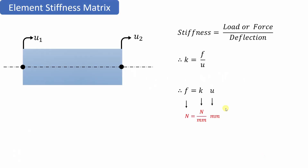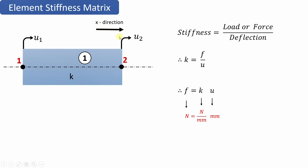In this video we will see how to find out the global stiffness matrix. First we will understand the formulation of the element stiffness matrix and then go into detail of the global stiffness matrix. Stiffness is nothing but load per unit deflection, denoted by k. Load or force is F and deflection is delta or u, so F is equal to k multiplied by u. Stiffness is in newton per mm and u is in mm, so the units balance.